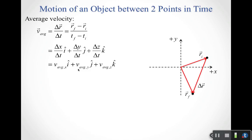The average velocity — we'll talk about both instantaneous and average velocity — is defined as the displacement of the object divided by the chunk of time. Delta t is just how long the clock ran between the initial and final positions. So average velocity equals (r_final minus r_initial) divided by delta t, a scalar. The components are simply delta x over delta t, delta y over delta t, and delta z over delta t.